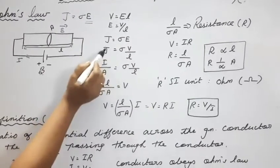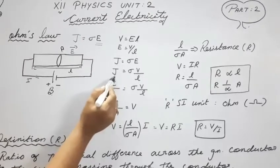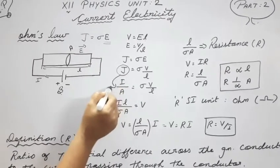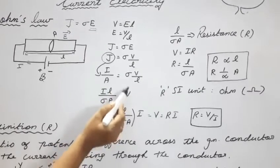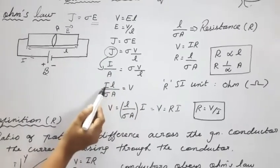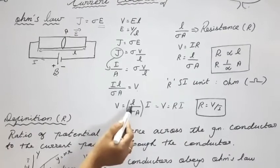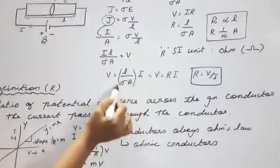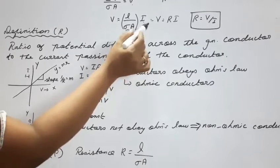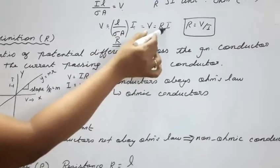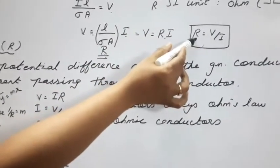Since J = I/A, we write I/A = σ · V/l, therefore V = (I·l)/(σ·A). So V = (l/σA) · I. The quantity l/(σA) is the resistance R of the conductor. Therefore V = R·I, or equivalently V = IR, and R = V/I. Also, R = l/(σA).